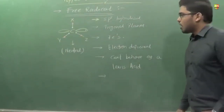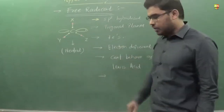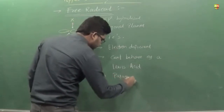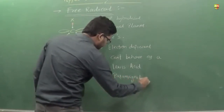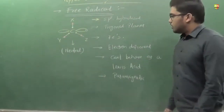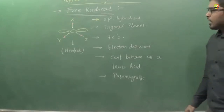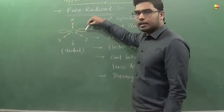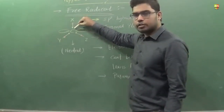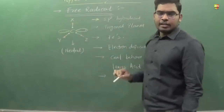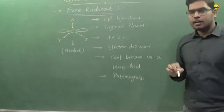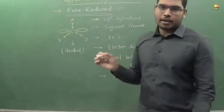Since it has one unpaired electron present with it, it is paramagnetic. What is the magnetic behavior of carbocation? In the carbocation, we do not have this unpaired electron — we have only three bond pairs with one positive charge, so all the electrons are paired. So carbocations are diamagnetic in nature, while free radicals are paramagnetic in nature.